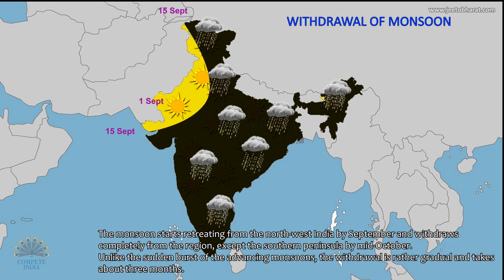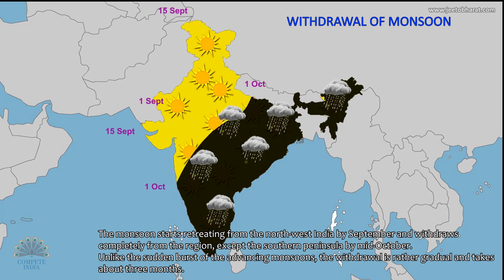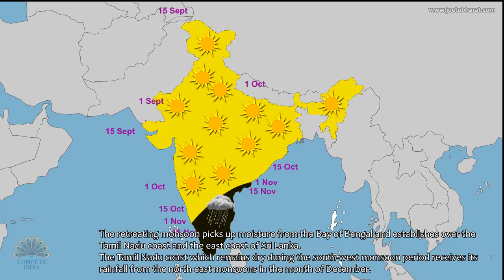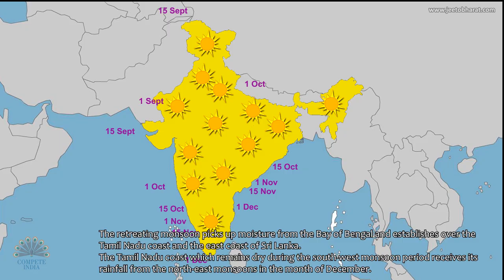Unlike the sudden burst of the advancing monsoons, the withdrawal is rather gradual and takes about three months. The retreating monsoon picks up moisture from the Bay of Bengal and establishes over the Tamil Nadu coast and the east coast of Sri Lanka. The Tamil Nadu coast, which remains dry during the southwest monsoon period, receives its rainfall from the northeast monsoons in the month of December.